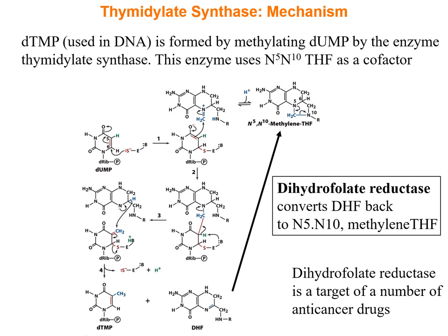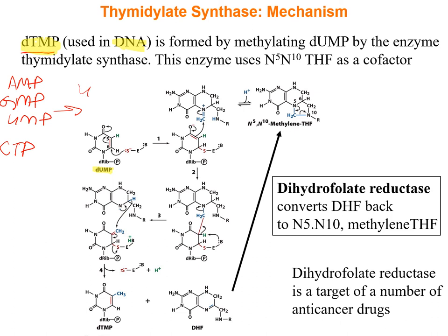In the final slides, we discuss how the cell generates deoxy-TMP. Reviewing the pathway: AMP, GMP, and UMP are made by de novo biosynthesis; CTP is made by cytidylate synthetase using ATP and glutamine as amino donors. Thymine is found exclusively in DNA, so we make the deoxy-TMP form. It is made from deoxy-UMP, starting from UMP which is converted to UDP.